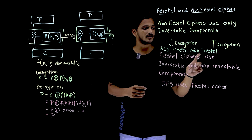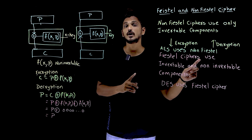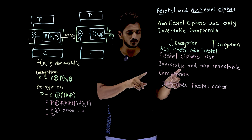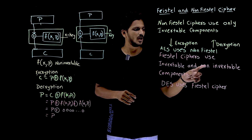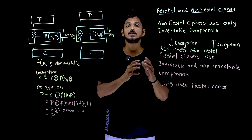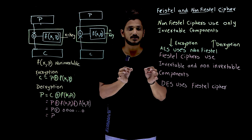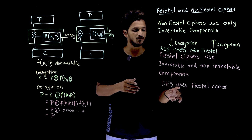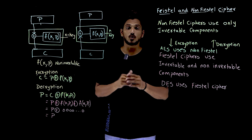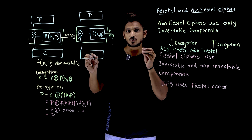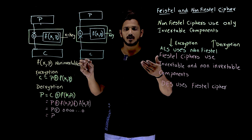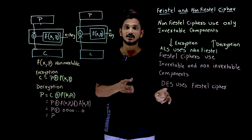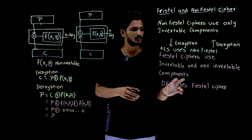Coming to Feistel ciphers — Feistel ciphers use both invertible and non-invertible components. The difficulty you need to understand is: immediately when you hear this, the first question you will get is how non-invertible components are handled during decryption. That is the key point in Feistel ciphers. In our coming classes, when we discuss DES — Data Encryption Standard — we are going to use Feistel ciphers. In this class, we will give a good idea of how Feistel ciphers work and their logic.